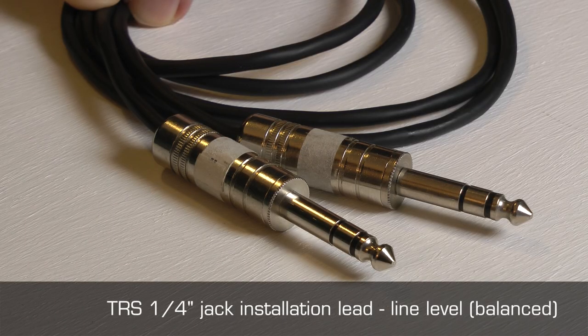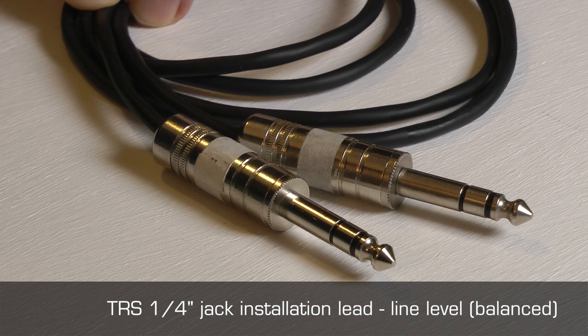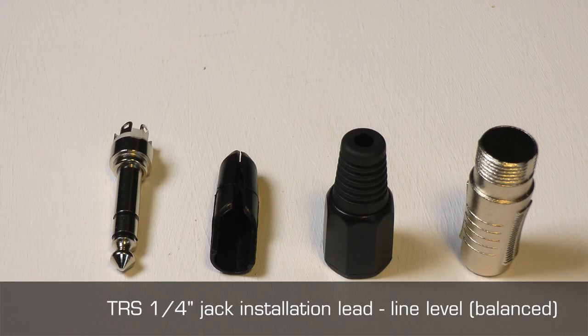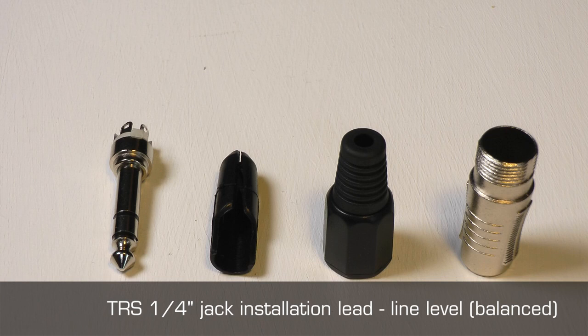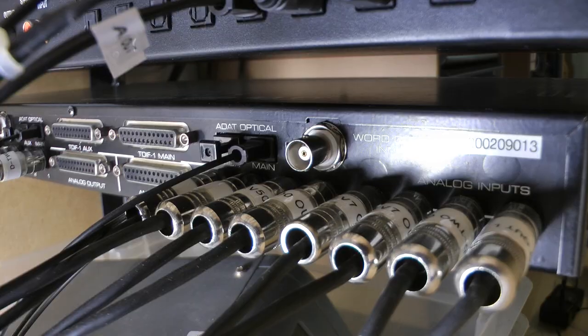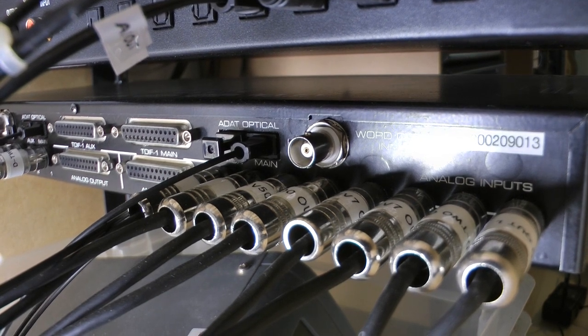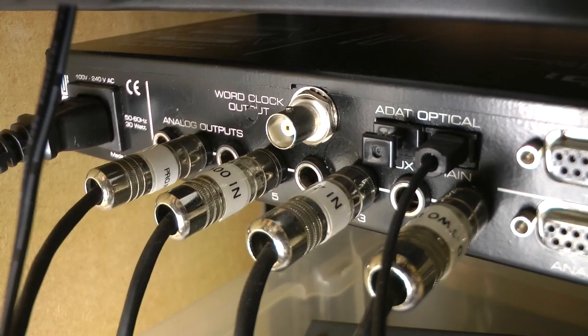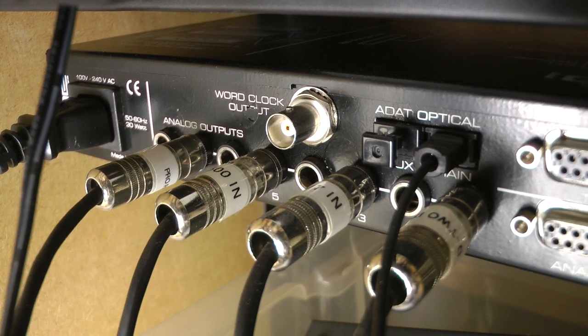Next up, we've got a TRS quarter-inch jack installation lead. It's a line-level electrical signal, this time balanced, male-to-male TRS quarter-inch jacks. It's used for static studio installation wiring looms and is a cost-effective alternative to XLRs.